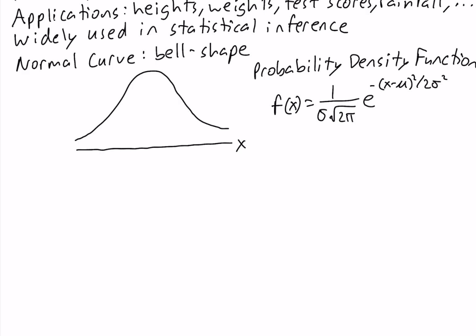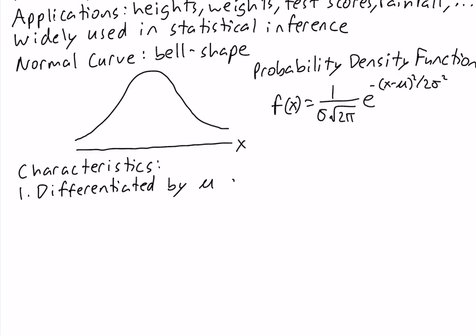Let's talk about some of the characteristics of the normal probability distribution. The first characteristic is that the normal distribution is completely determined by two parameters: the mean and the standard deviation. So if you have two normal distributions with the same mean and standard deviation, they're going to be identical.